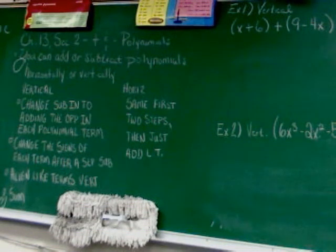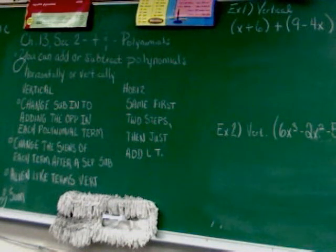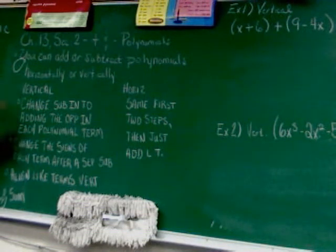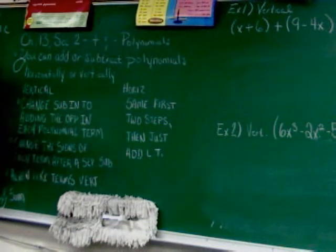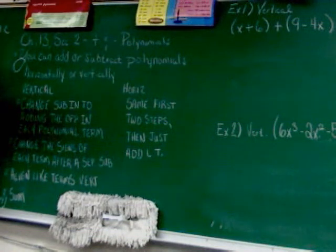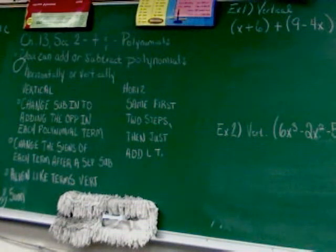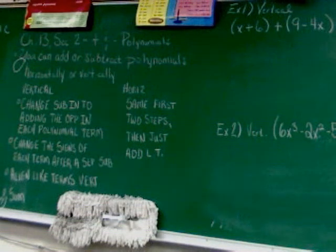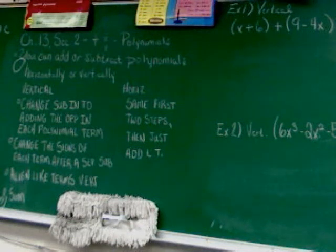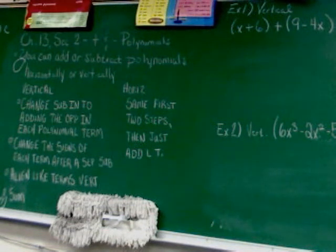There are two methods for adding and subtracting polynomials: you can work with them vertically or horizontally. I tend to prefer adding and subtracting vertically because that's like old-school elementary arithmetic — when you first learn to line up the numbers and do the problems that way. You can also add them horizontally; it's a little less writing, but I more often see mistakes. I'll cover both with you.